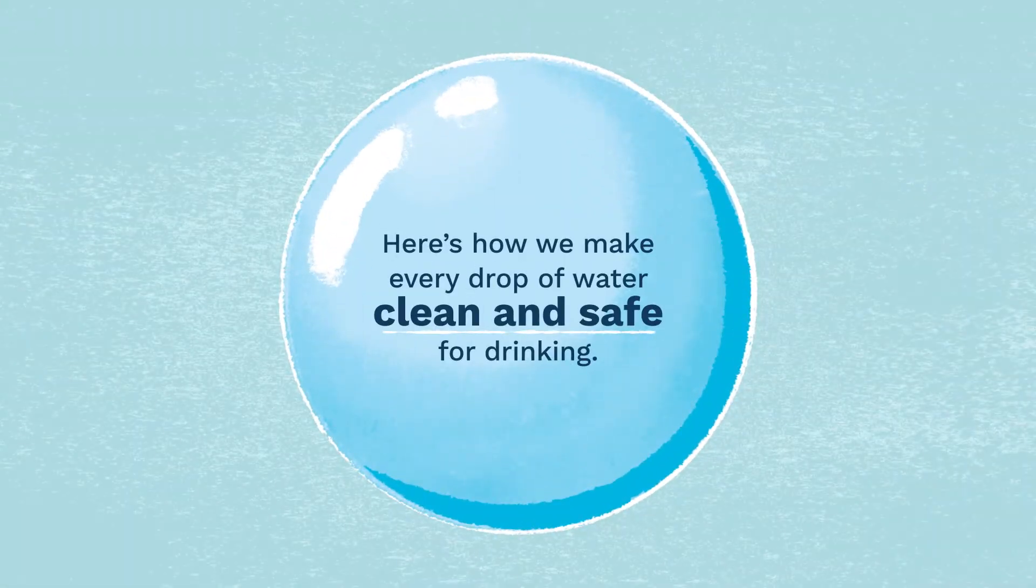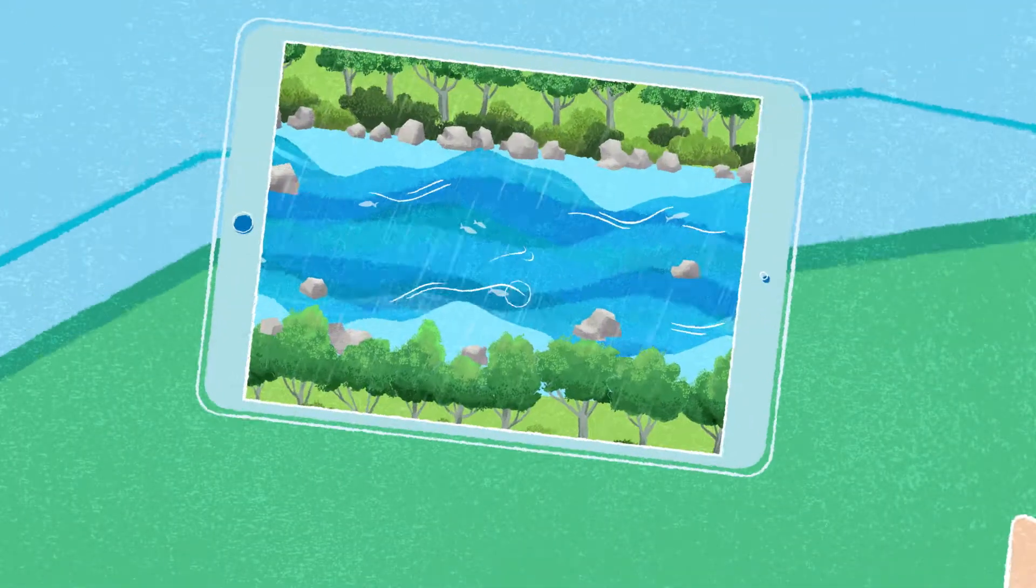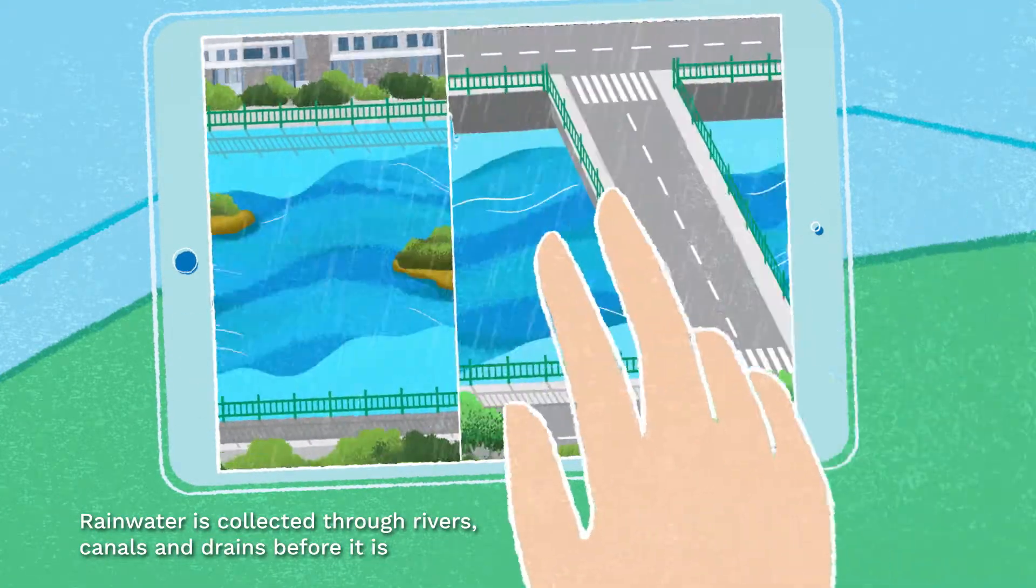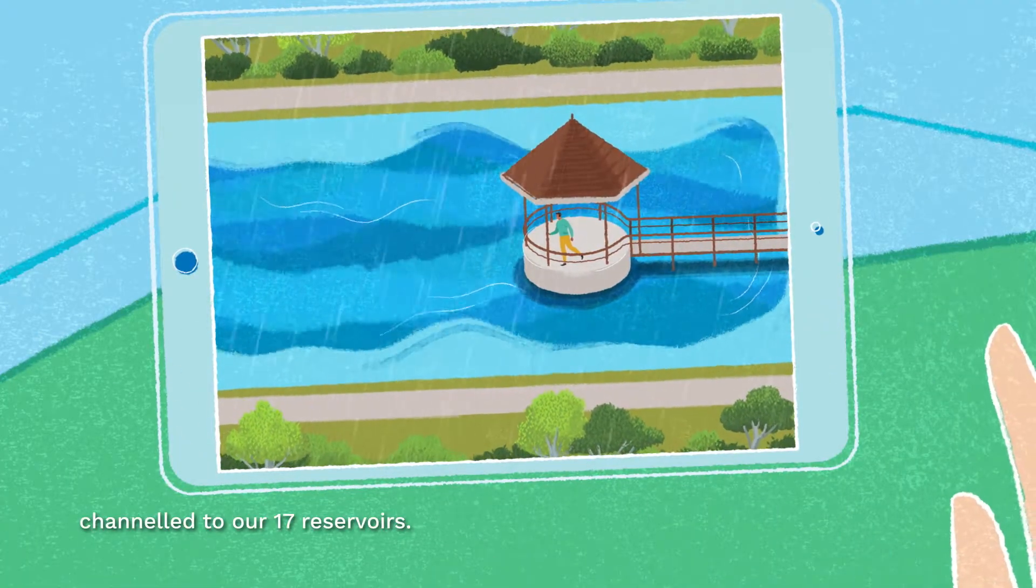Here's how we make every drop of water clean and safe for drinking. Rainwater is collected through rivers, canals, and drains before it is channeled to our 17 reservoirs.